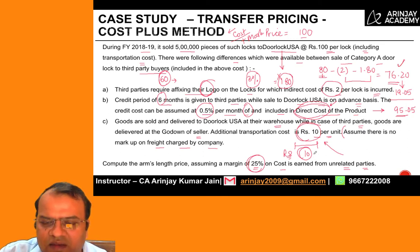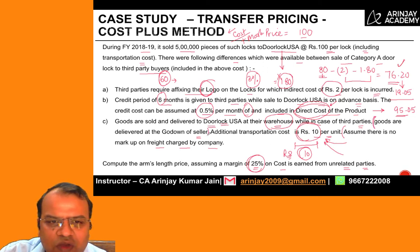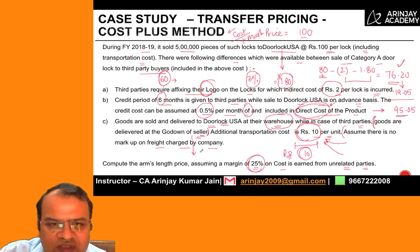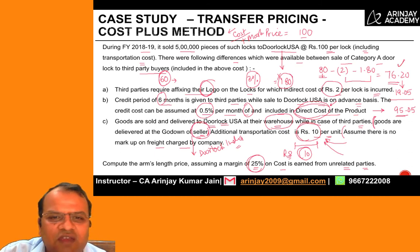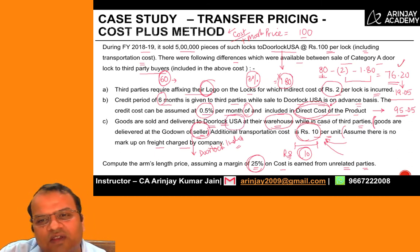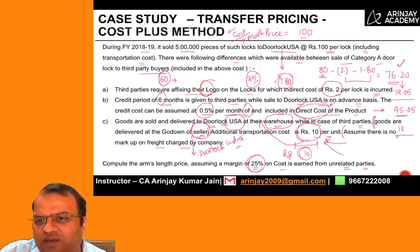There is also an additional 10 rupee cost incurred to deliver goods to the warehouse of Door Lock USA. Carefully reading the problem, goods for third parties are delivered at the godown of the seller — meaning Door Lock India's warehouse. But for Door Lock USA, goods are sent to their warehouse. So this additional cost is incurred towards Door Lock USA, and I will add this to the cost, giving 105.05 as the arm's length price.